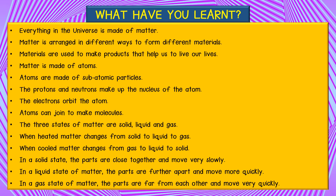Atoms are made of subatomic particles. The protons and neutrons make up the nucleus of the atom. The electrons orbit the atom. Atoms can join to make molecules.